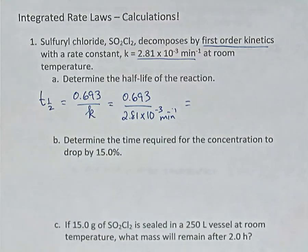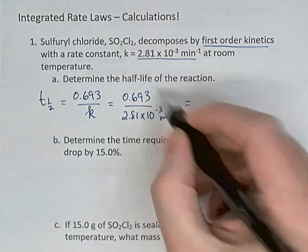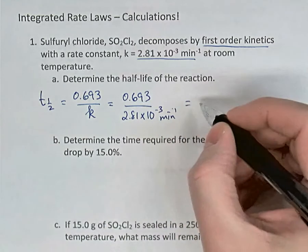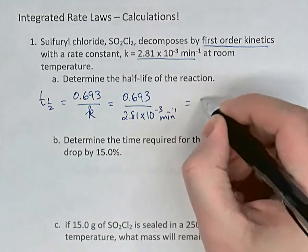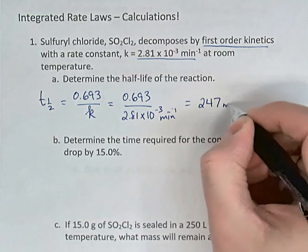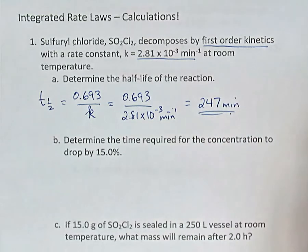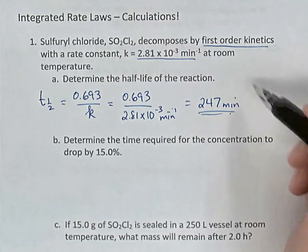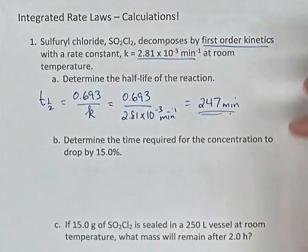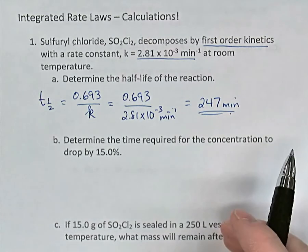Looking at the units, the half-life will come out in minutes. That gives us 247 minutes. If you were asked for the half-life in different units, you could convert it to seconds or hours.